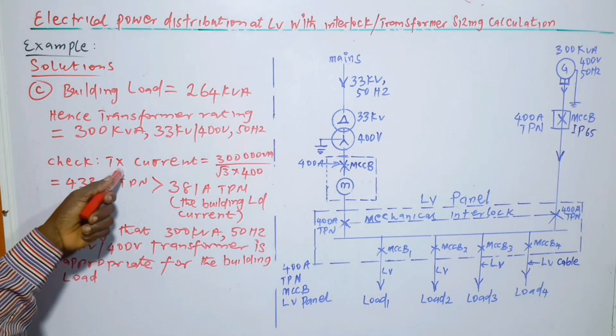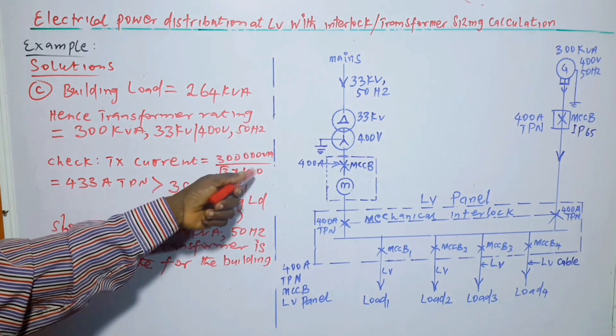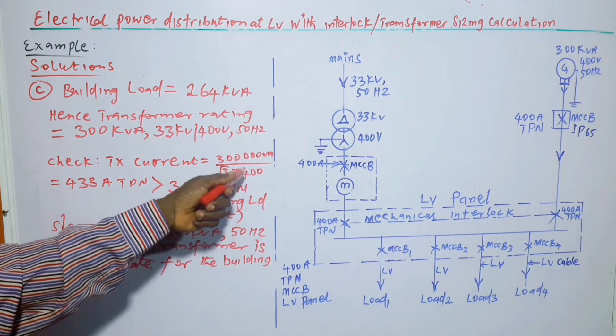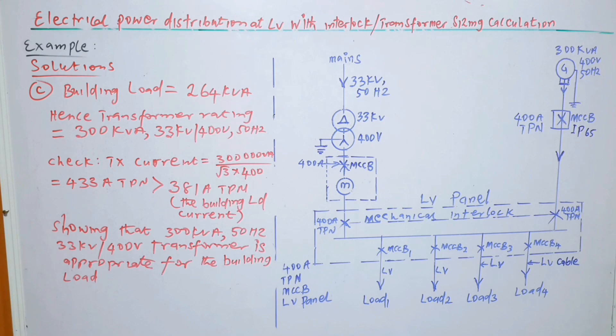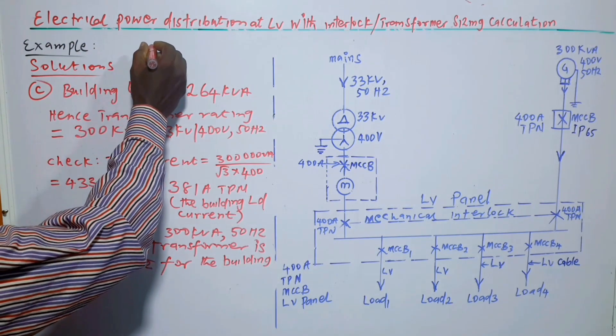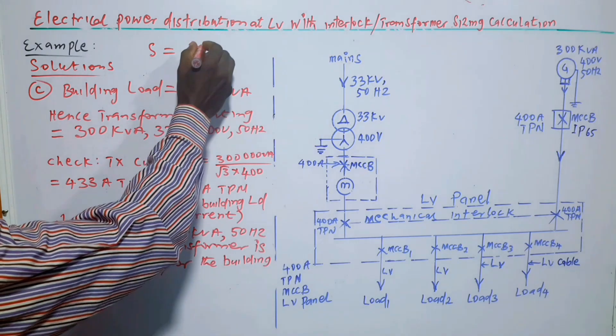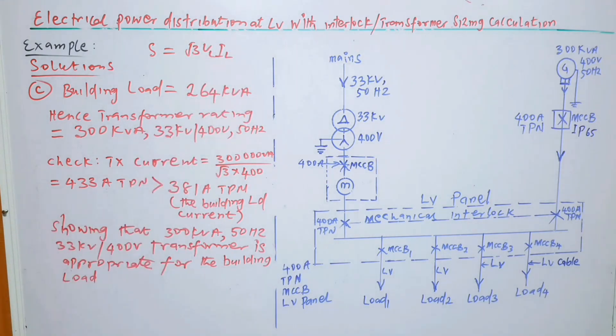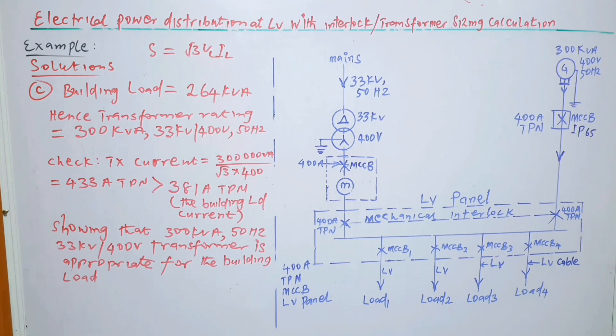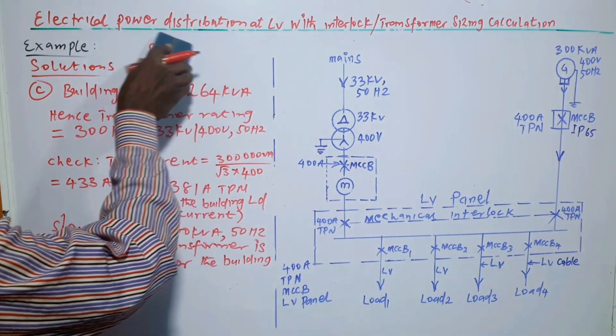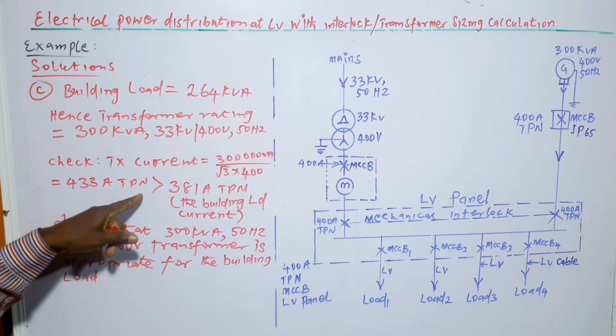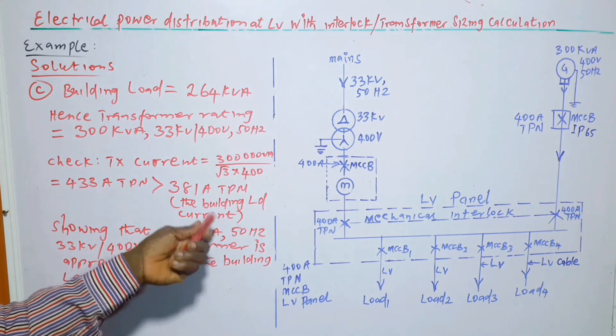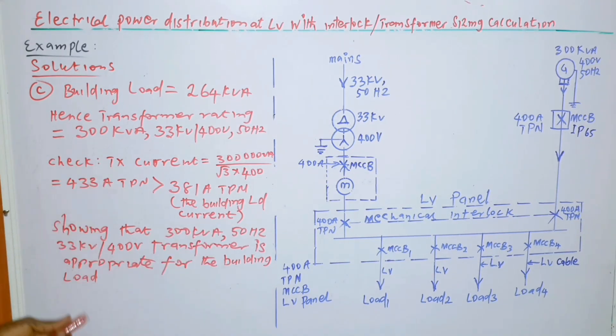Then we can check, the transformer current is 300 kVA or 300,000 VA divided by root 3 times 400. From the apparent power formula, S is equal to root 3 V line I line. So from there, we can calculate the current. If it is correctly calculated, the answer is 433 ampere triple phase with neutral, which is greater than the load current calculated in the B part.